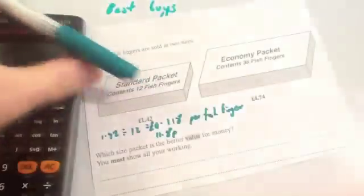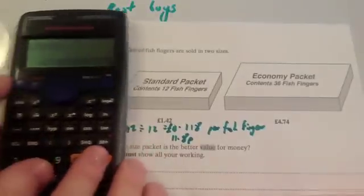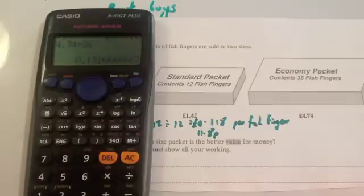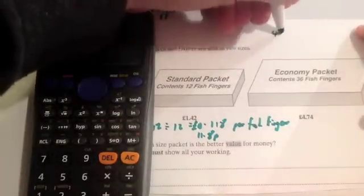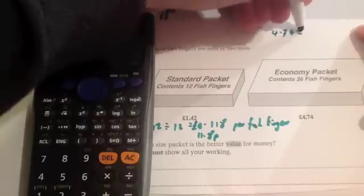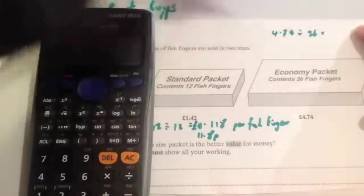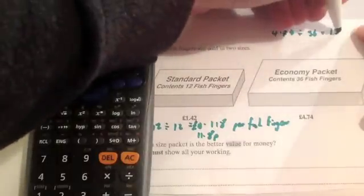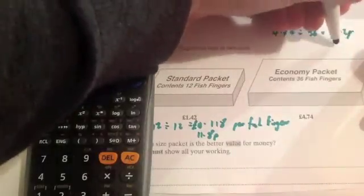Using the other one, the cost is £4.74 divided by 36 fish fingers. If you do £4.74 divided by 36, you get the cost for each fish finger to be roughly 13.2 pence per fish finger.